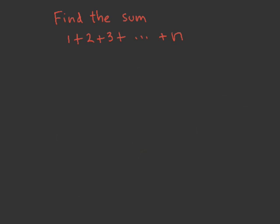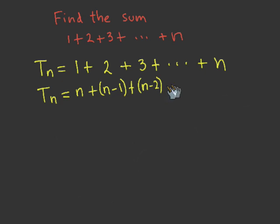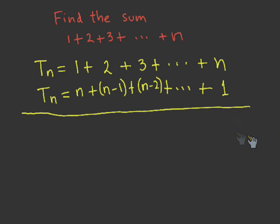It is natural to try to solve similar problems with similar solutions. We will try to solve this problem using the same idea as Gauss with a small modification. Let us call t sub n equal to 1 plus 2 plus 3 plus up to n, the nth triangular number. We can rearrange the elements in reverse order, so t sub n also equals n plus n minus 1 plus n minus 2 plus up to 1.